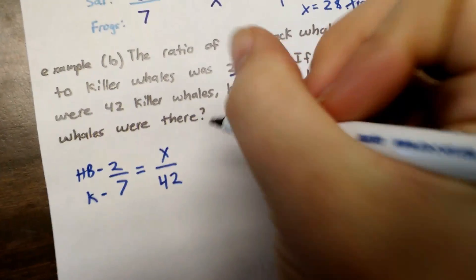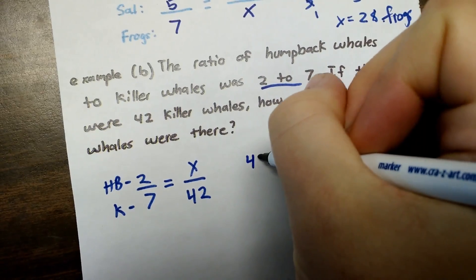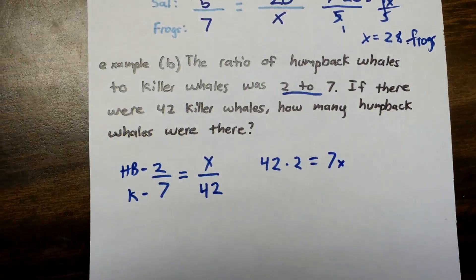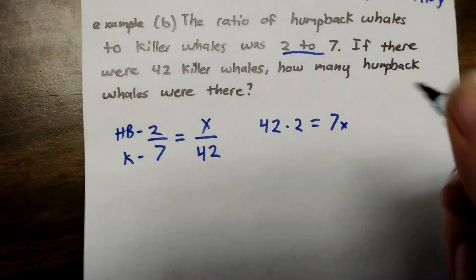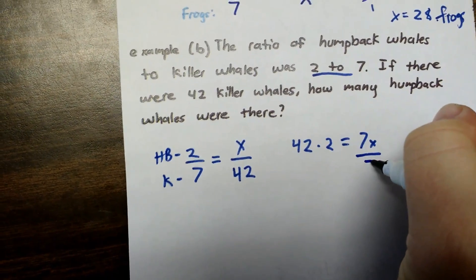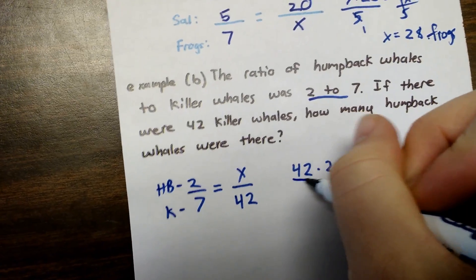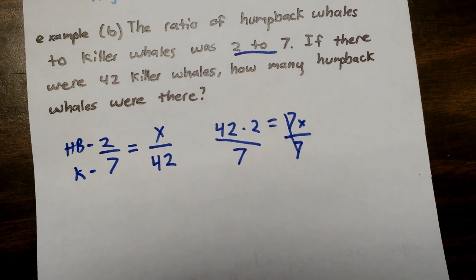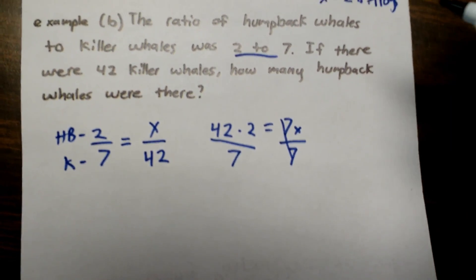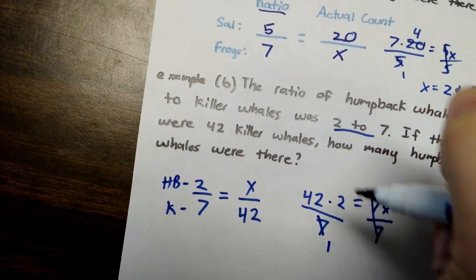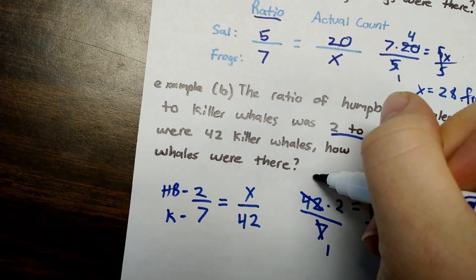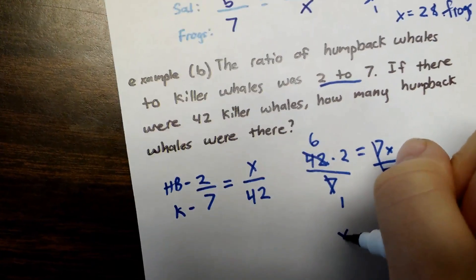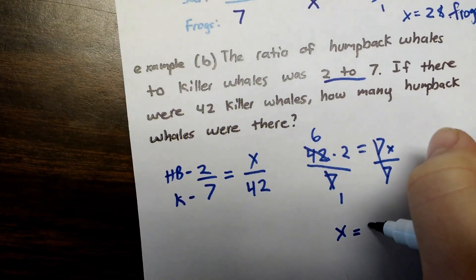Now I can write it to solve. I got 42 times 2 equals 7 times x. And now I can divide by 7 and divide by 7. Okay? 7 goes into 7 once. 7 goes into 42 six times. So x equals 12.